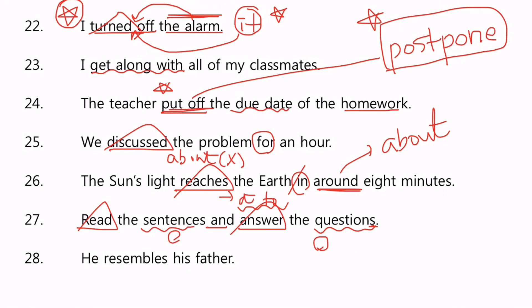28. He resembles his father. 그는 그의 아버지를 닮았다. 그래서 이것도 타동사고, 그래서 주어가 있고 동사가 있고 바로 대상 이렇게 온다는 거. 이 정도 알고 계시면 될 것 같아요. 쉽죠?